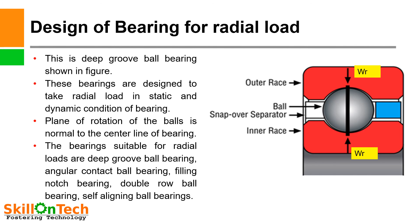Design of bearing for radial load. You can see a picture of a deep groove ball bearing. These bearings are designed to take radial load in static and dynamic conditions, and the plane of rotation of the ball is normal to the center line of the bearing. The bearings suitable for radial loads are: deep groove ball bearings, angular contact ball bearings, filling notch bearings, double row ball bearings, and self-aligning ball bearings.